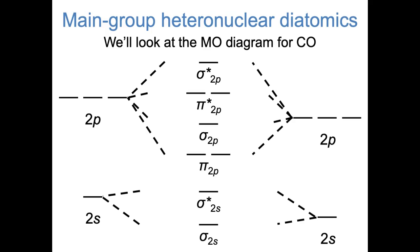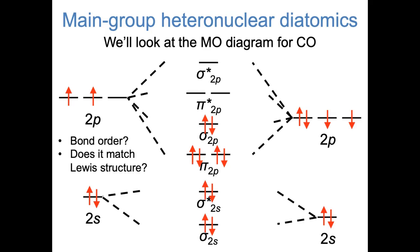Now we're ready to fill in the electrons. The carbon atom brings with it 4 valence electrons and the oxygen atom brings 6. So we put the electrons on the sides of the MO diagram for bookkeeping purposes, and the important thing is that we fill in the 10 total electrons in the middle from lowest energy to highest energy. Looking in the middle of the diagram, you can see that there are 8 bonding electrons and 2 antibonding electrons. That means the bond order is one half times 8 minus 2, or 3. It's a triple bond.